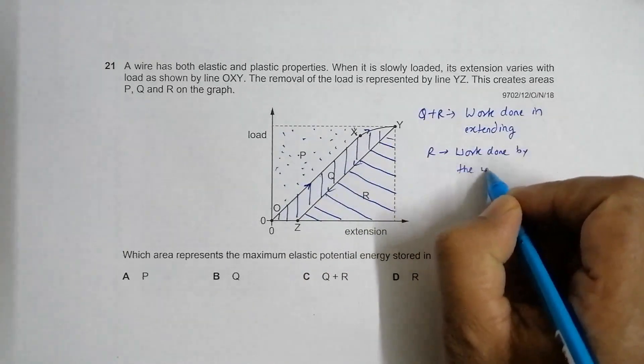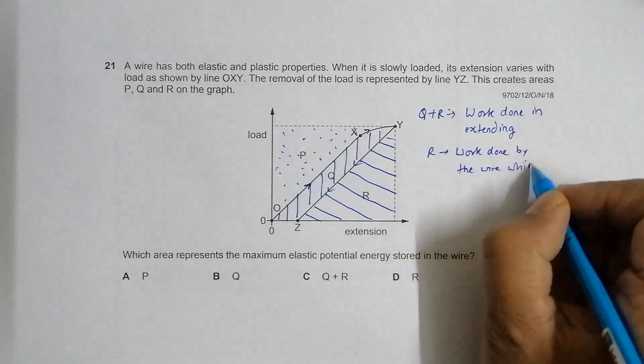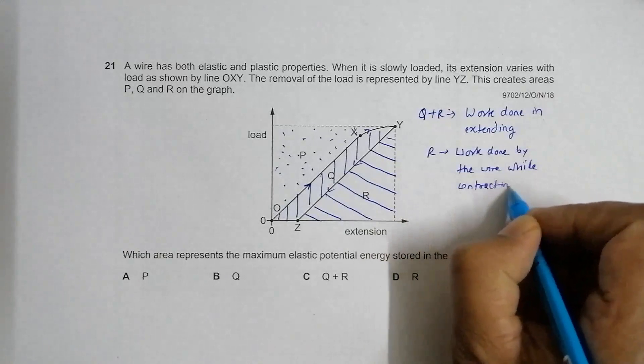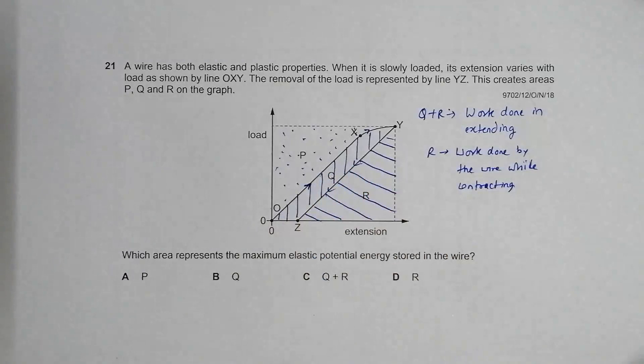Area Q is the energy that it loses, either for change of shape, change of size, or heat. We have been asked for the maximum elastic potential energy.